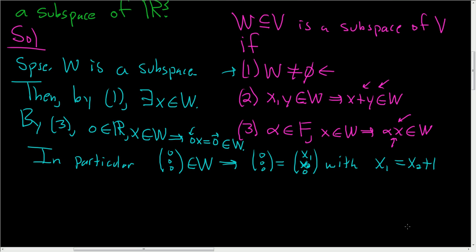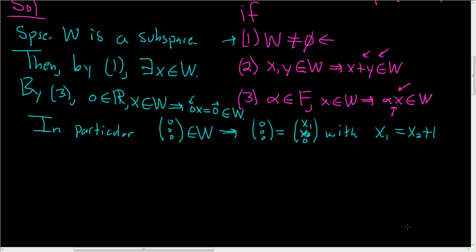Okay, let's go over that again. So we're actually proving it's not a subspace. So suppose it is, and we're going to reach a contradiction. So by one, it's not empty, so we can find some X. By three, since zero is a real number and X is in W, the zero vector is actually in W.